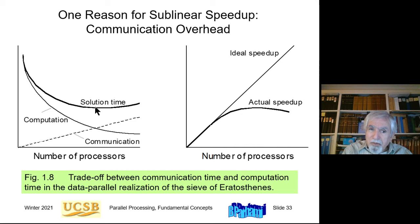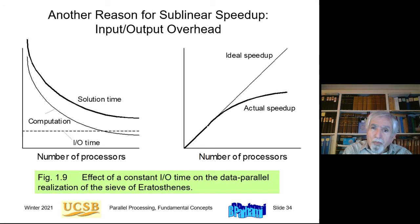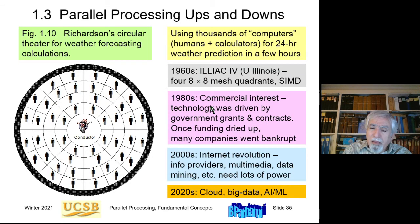The best solution is to keep the number of processors below the point of diminishing returns. The ideal speedup increases linearly with processors; the actual speedup drops due to overhead and reaches a maximum. The optimal choice of processor count is somewhere below that maximum, where adding more processors doesn't substantially improve solution time relative to the added cost.